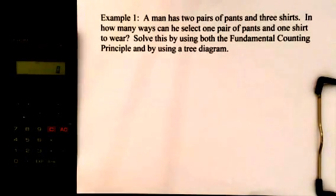For the first example, a man has two pairs of pants and three shirts. In how many ways can he select one pair of pants and one shirt to wear? Solve this by using both the fundamental counting principle and by using a tree diagram.